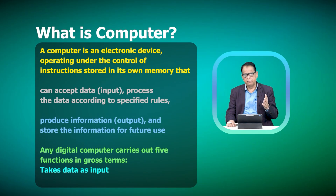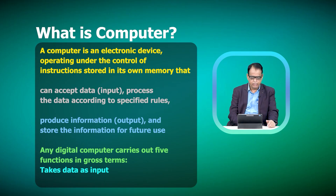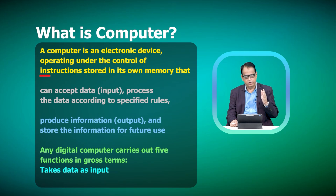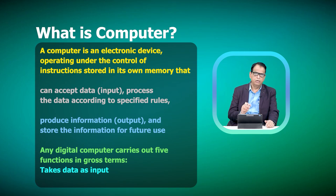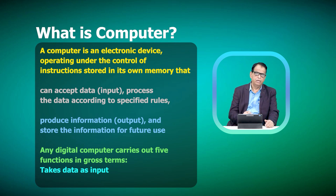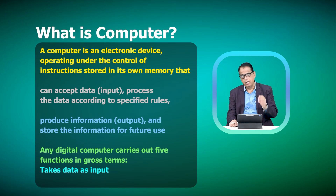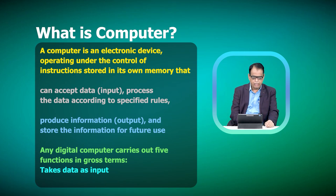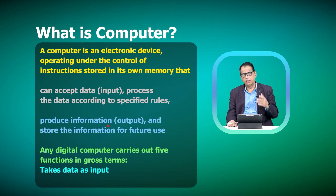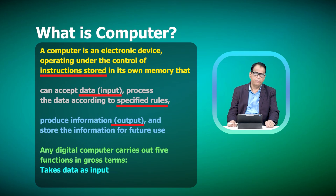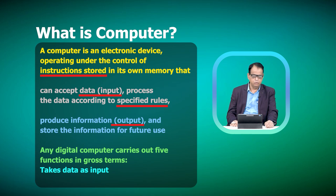A computer is nothing but an electronic device that is able to perform many operations. It operates under the control of instructions, and these instructions are stored in the memory of the computer system. The computer system can accept data as input, process the data according to specific rules or instructions written in a program, and then produce certain output. This output can be stored in memory or on other devices for future use.